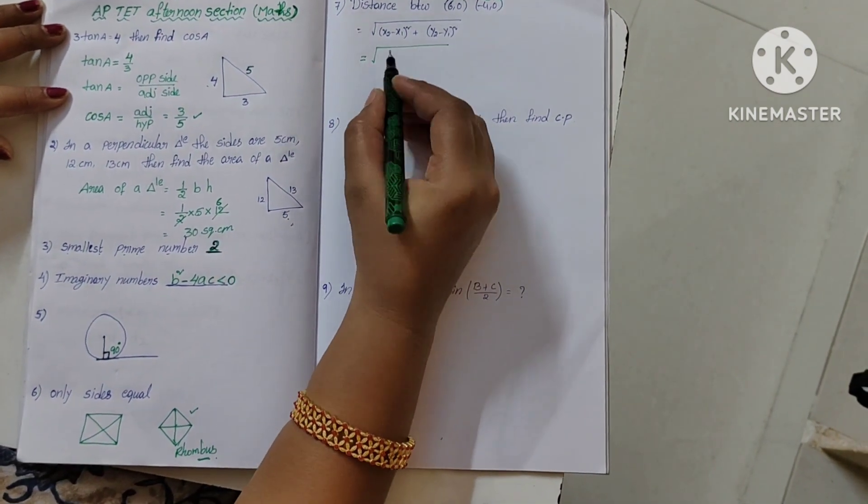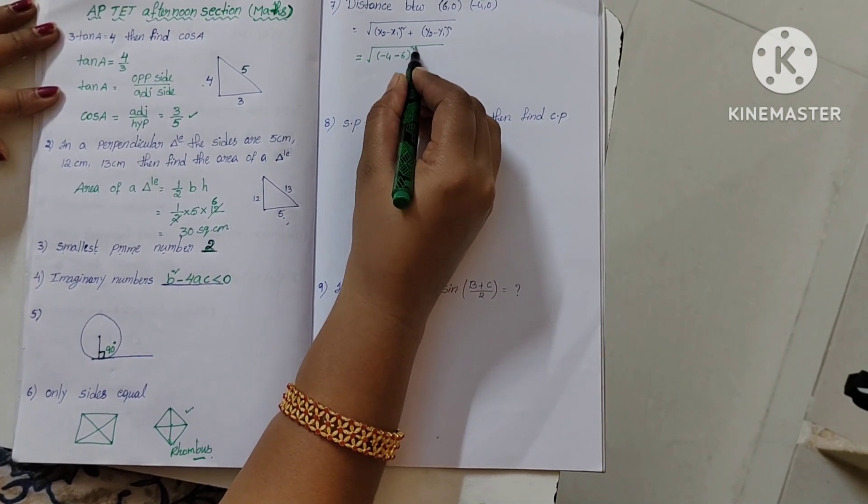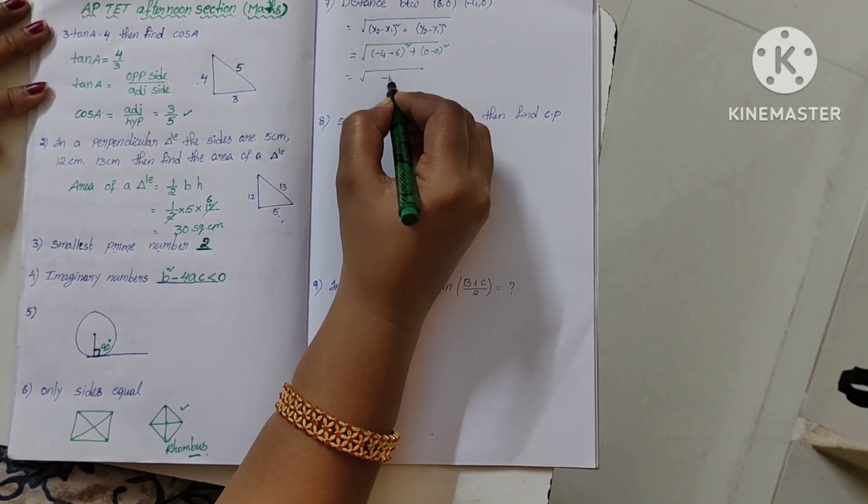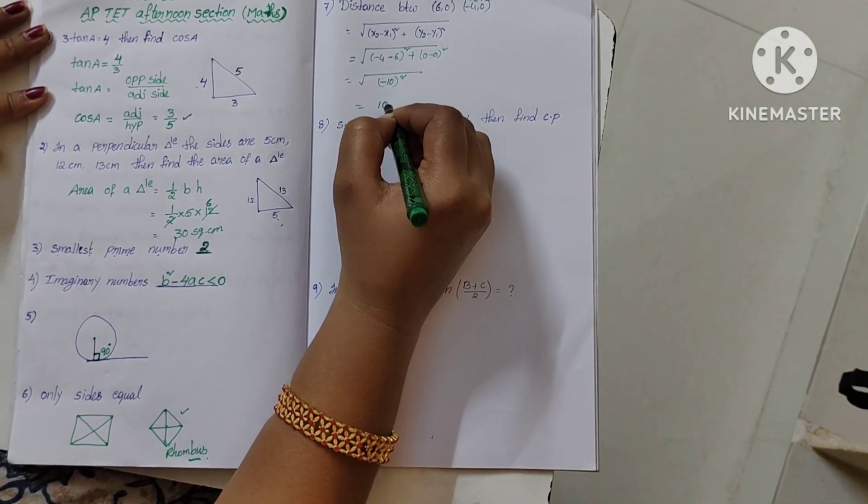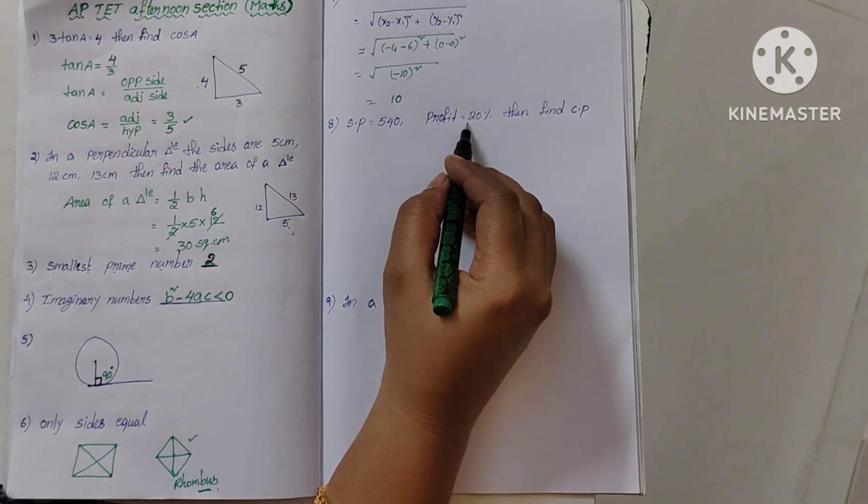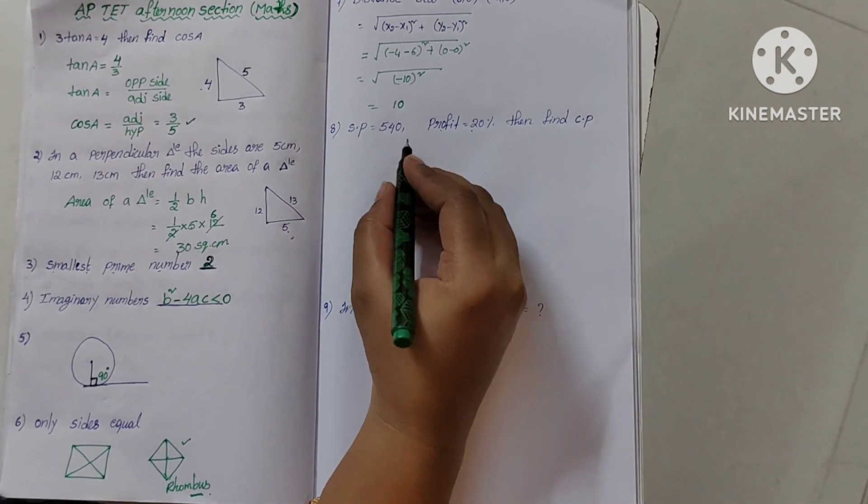Distance formula: under root of (x2 minus x1) whole square plus (y2 minus y1) whole square. Substituting these values gives minus 10 whole square, which equals 10. Next: selling price 540 and profit 20%.